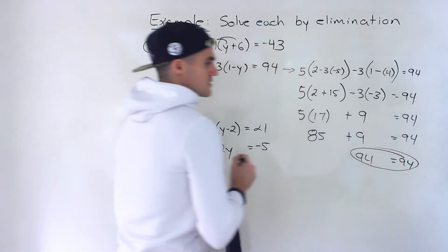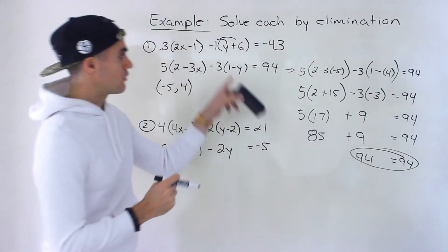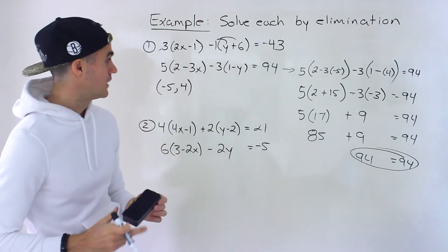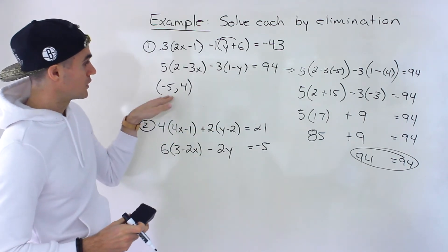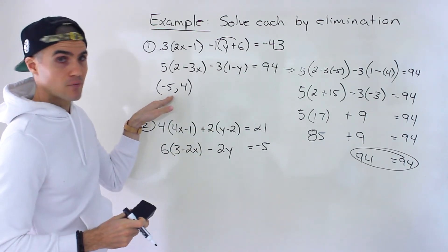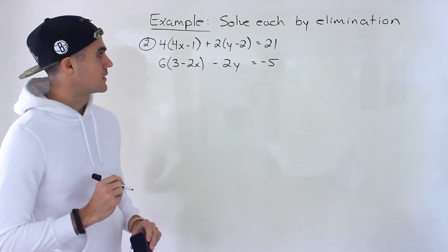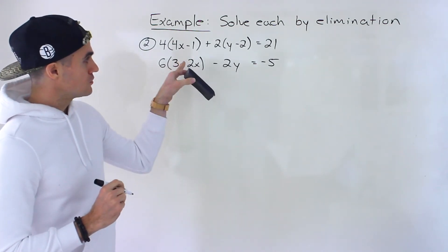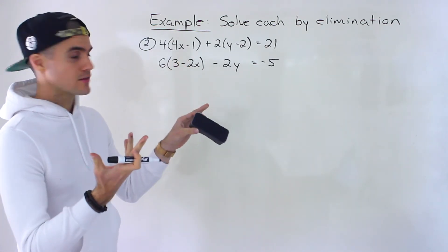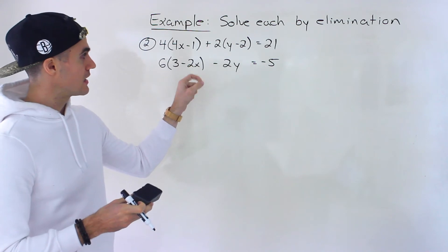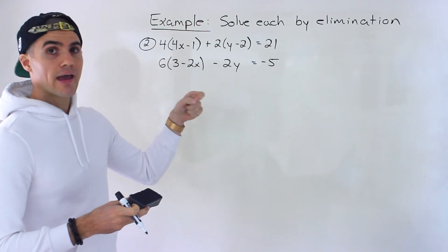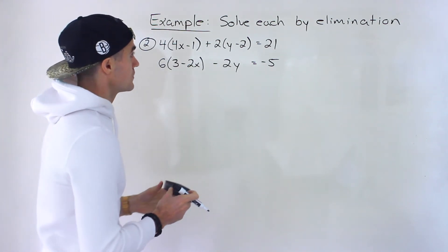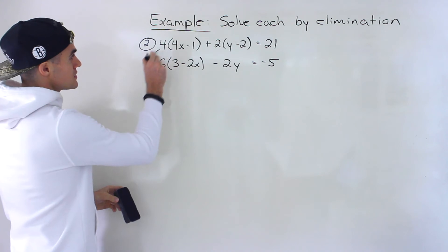So both equations pan out in the check, and we could be pretty confident that that right there is the solution. Moving on to number 2 — same sort of thing. We got to take both of these lines and simplify them. I'm going to start with the first line — distribute that 4 in.